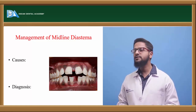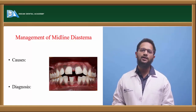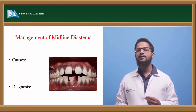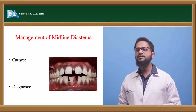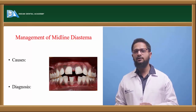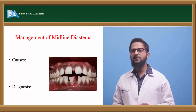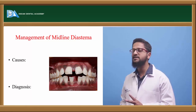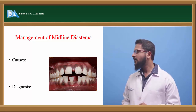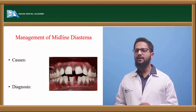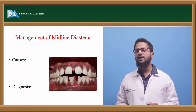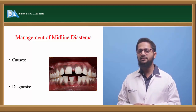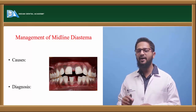Second cause is arch length-tooth size discrepancy. Midline diastema can also occur under situations wherein arch length is more and tooth size is less. Third is because of a thick labial frenum, which is considered a quite common reason for midline diastema. Because of a thick labial frenum, there is spacing between two central incisors. Normally the position of the labial frenum migrates appropriately as the teeth erupt, but in certain patients it persists and prevents the union of two central incisors, with a thick band existing between them.